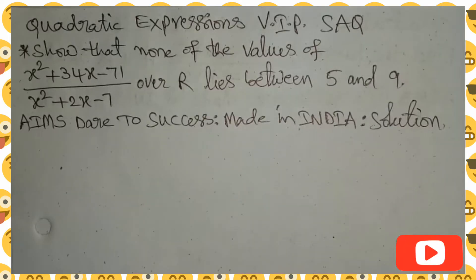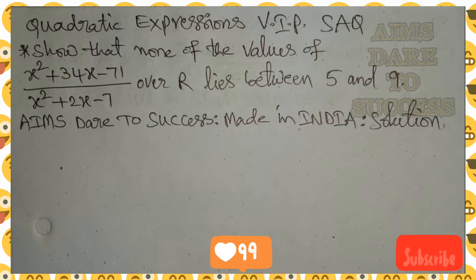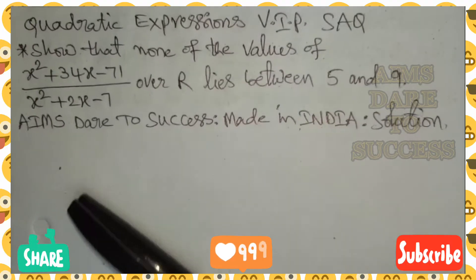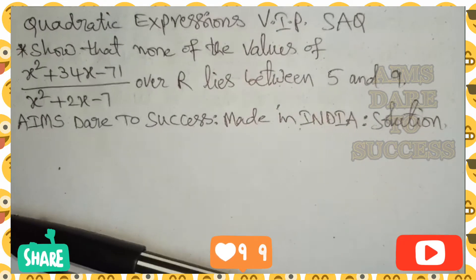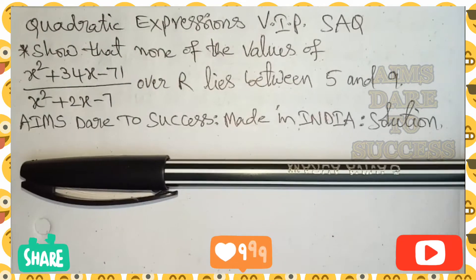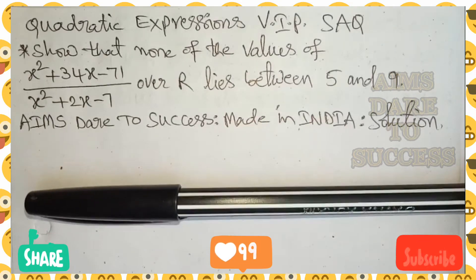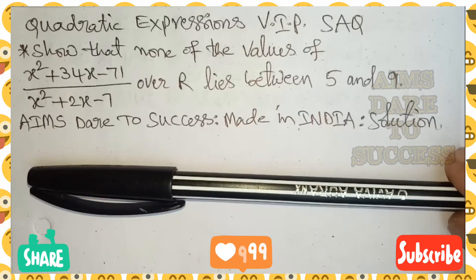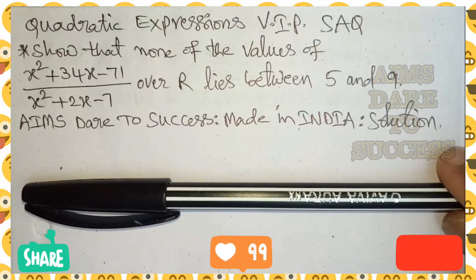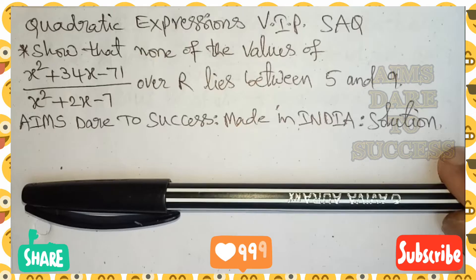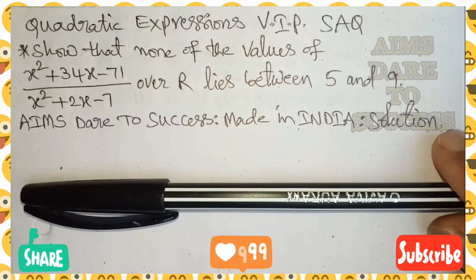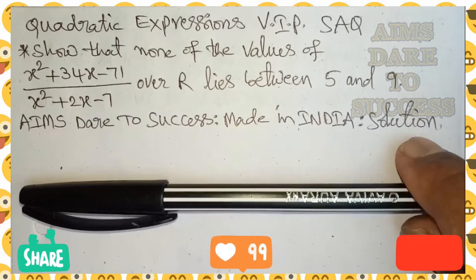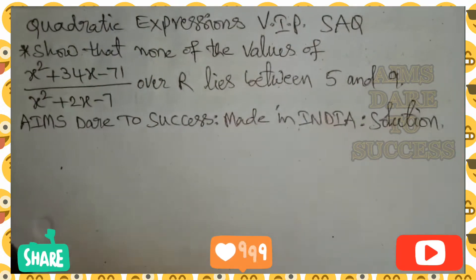Today I came with one more trick, one new video from Quadratic Expressions. Very important previous VIP short answer question: Show that none of the values of (x² + 34x − 71) divided by (x² + 2x − 7) lies between 5 and 9. None of the values lying between 5 and 9 means it does not lie between 5 and 9.